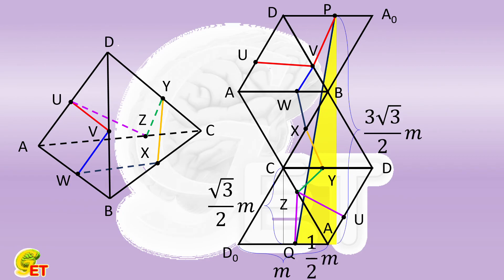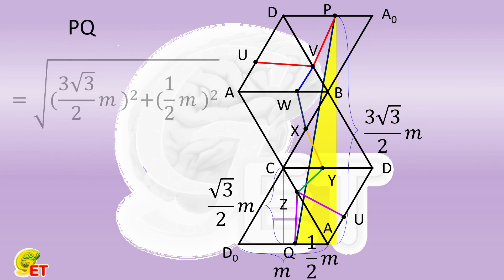Now, we apply the Pythagorean theorem. It is easy to obtain the distance between P and Q is equal to the square root of 7 times M.